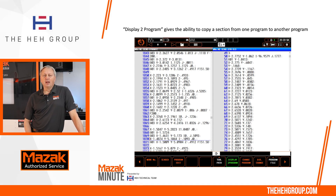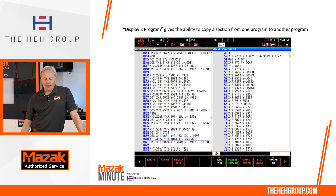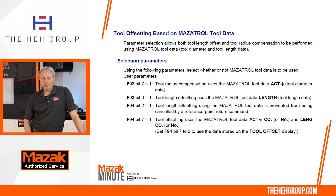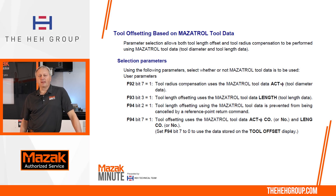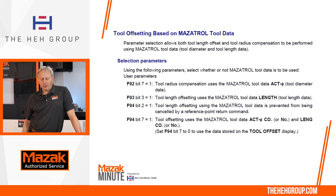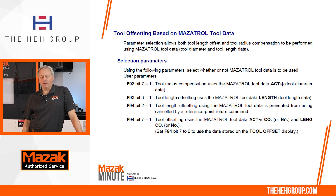Another useful feature is copying a section of one program and merging it into another — essentially a cut-and-paste function. You can have one program on the right side and move sections over to the other. If you're new to running EIA programs on Mazak machines, I recommend working with your applications team at Mazak or the distributor level to determine how your CAM system programs the part — whether from the center of the tool or the cutter edge.